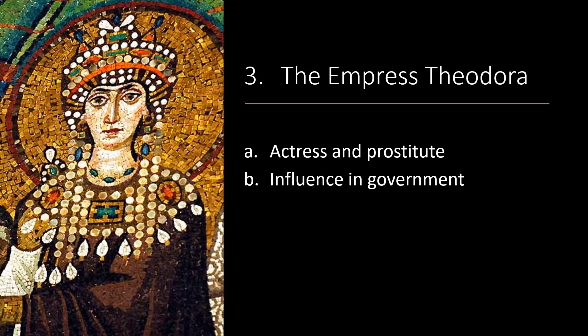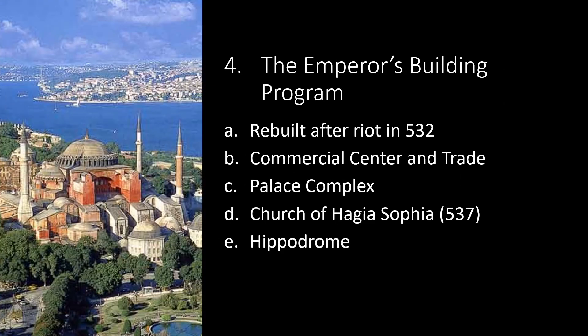The Empress Theodora: the law had to be changed in order for Justinian to marry Theodora, who influenced him in both church and state affairs and strengthened his resolve to deal with the Nika revolt. She was seen as an actress and a prostitute — actually all actresses at that time were thought to be prostitutes — so that was the law that had to be changed in order for her to become the empress.